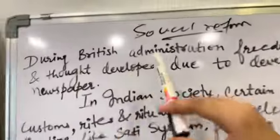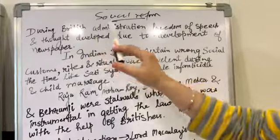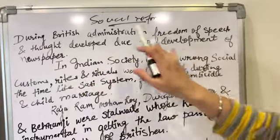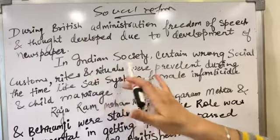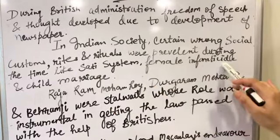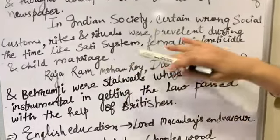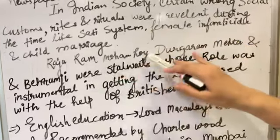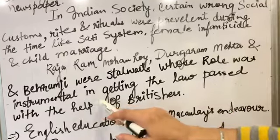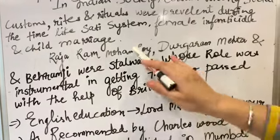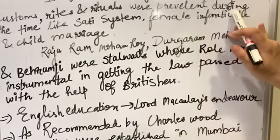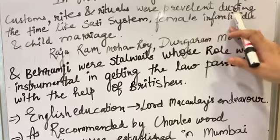During British administration, freedom of speech and thought developed due to newspapers. In Indian society, certain wrong social customs — like the sati pratha system, female infanticide, and child marriages — were banned. Raja Ram Mohan Roy, Durga Ram Mehta, and Bhairam Ji had an instrumental role in getting laws passed with the help of Britishers to ban all evil practices.